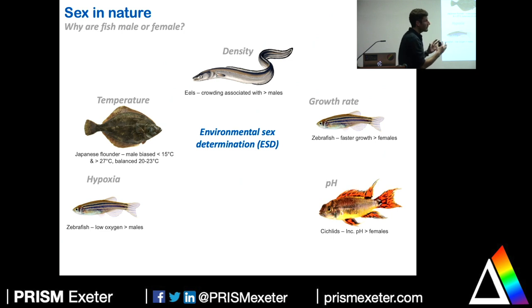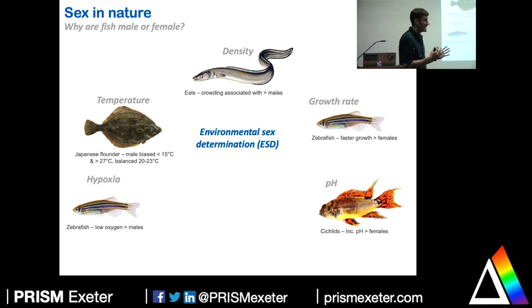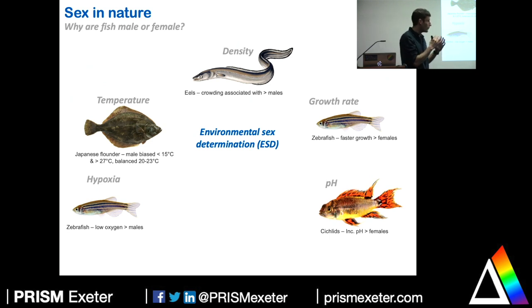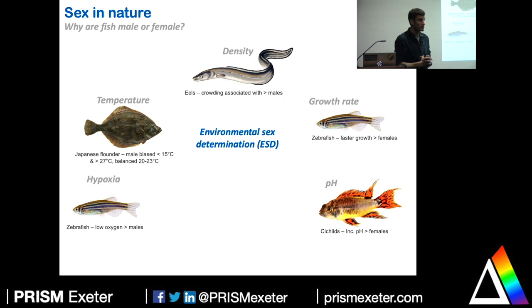There are really nice examples of where the environment influences sex. Japanese flounder: if temperature is too cold or too hot, they produce more males; if optimal, more females. In zebrafish, if oxygen is too low, there are more males in the population. In eels, crowding produces more males. Conversely, in zebrafish, faster growth produces more females. The pattern: where environmental conditions are more optimal, you produce more females, since egg production is more energetically expensive. Where conditions are suboptimal, you produce more males, because that's where genetic variation comes from, increasing the chance of adapting to environmental challenge.